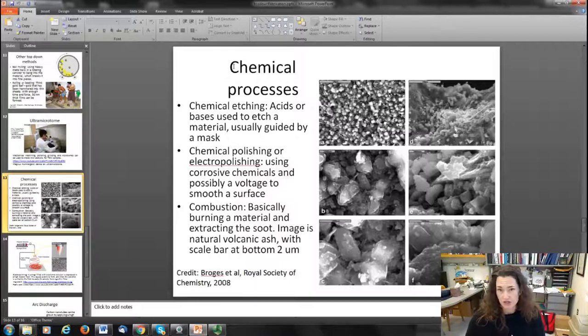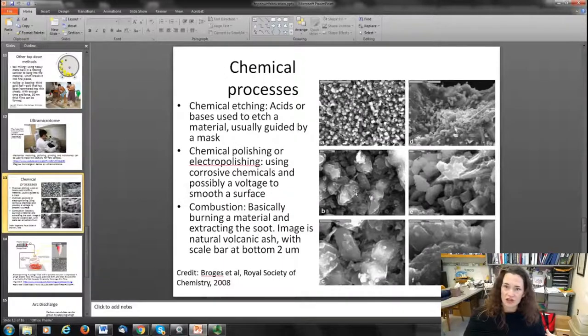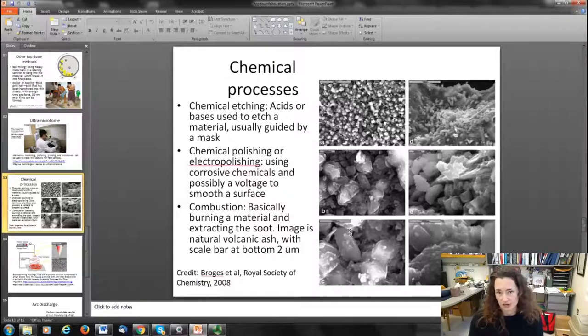Use corrosive chemicals and slurries and possibly voltages to make a really atomically smooth surface. You can use combustion—basically burn a material and extract the soot. The image here at the right is volcanic ash. The scale bar at the bottom is two micrometers, so volcanic ash can get really tiny. Any combustion process where you're burning and extracting soot can produce nanoparticles.